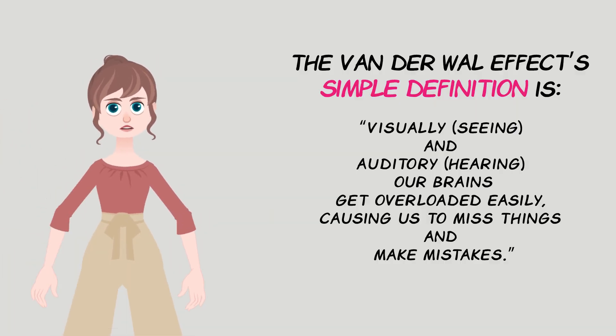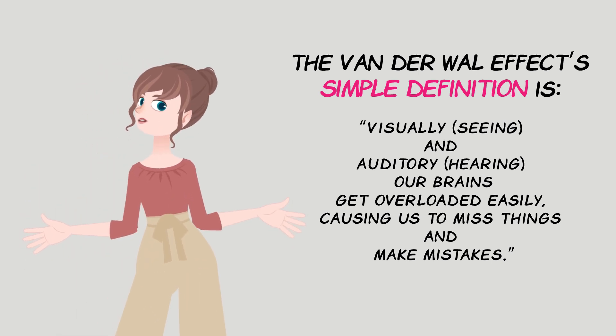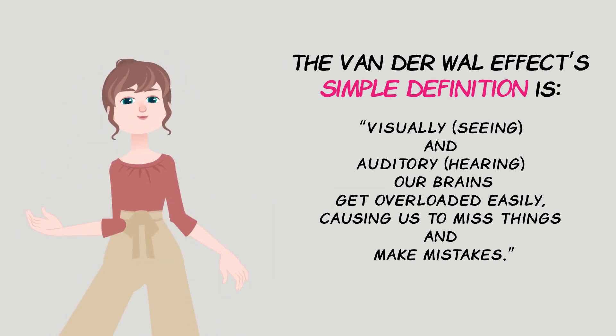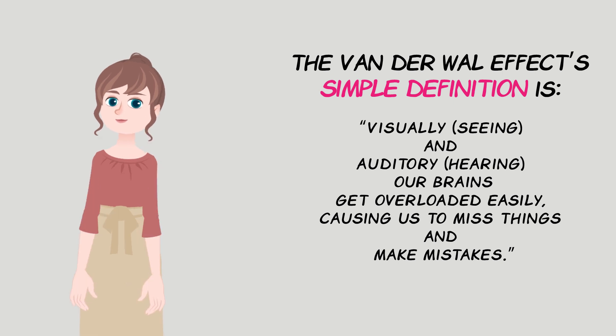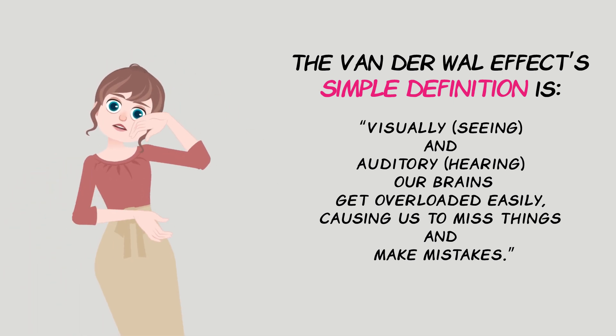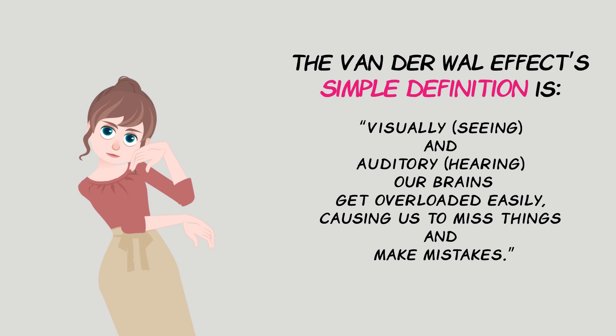The Vanderwall Effect's simple definition is: visually — seeing — and auditory — hearing — our brains get overloaded easily, causing us to miss things and make mistakes.